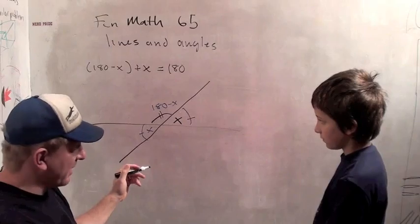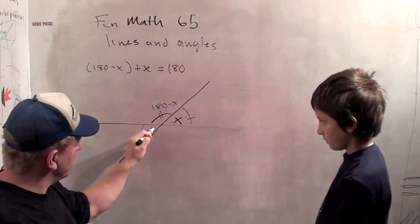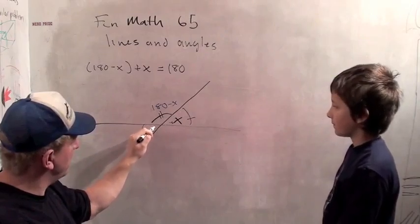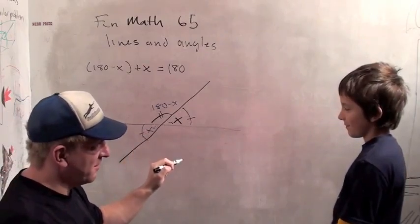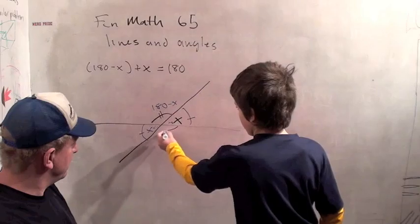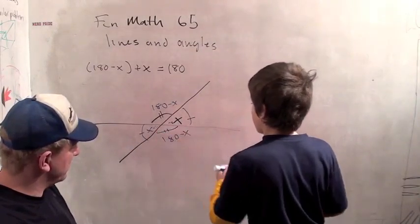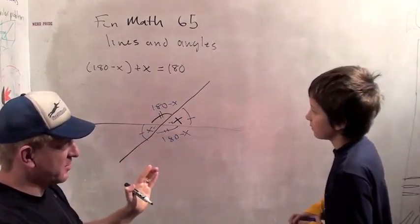And that tells us a neat fact. That these opposite angles, when two straight lines intersect, are the same. Are the? Same. Same. So this one's 180 minus x.